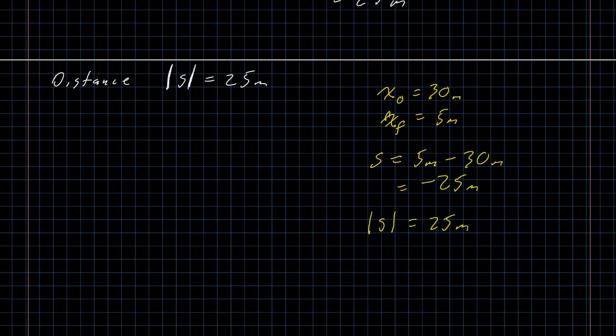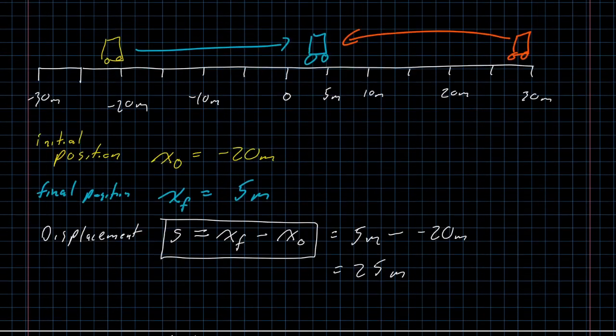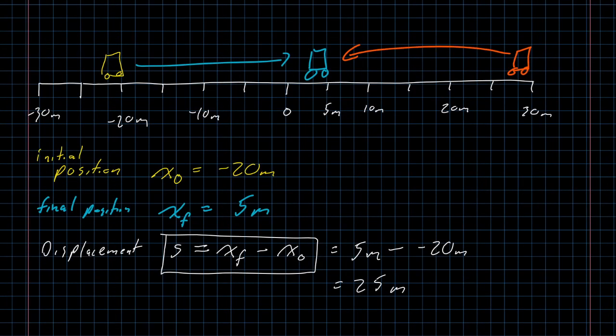All right. So, the displacement tells us whether we traveled to the left or to the right. In this example, I'm setting up my number line in the standard mathematical convention. Negative numbers going to the left, positive numbers going to the right. I could have set it up the other way. That might have been useful. It just isn't in this case. So, in this setup, positive displacement means I moved to the right. Negative displacement means I moved to the left.